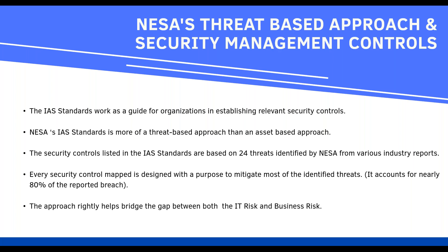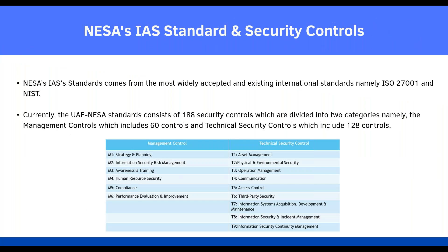Every security control is designed to mitigate identified threats, bridging the gap between IT risk and business risk. NESA's IS standard draws from ISO 27000 and NIST. There are 188 requirements divided into two categories: management controls (60 controls) and technical security controls (128 controls). You can quickly see how well it aligns with ISO 27001 and NIST.